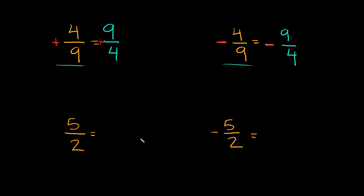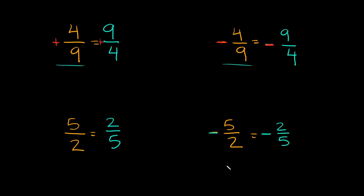So now let's try it with improper fractions. Nothing changes — it's still the same process. So if we have 5 over 2, the reciprocal would just be 2 over 5. And if we have negative 5 over 2, the reciprocal would be negative 2 over 5. This was negative, so we keep it negative.